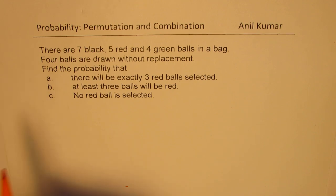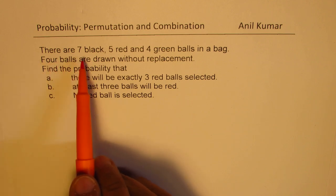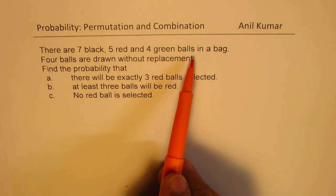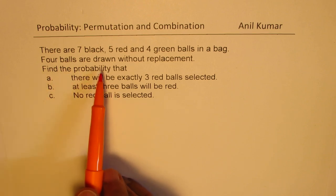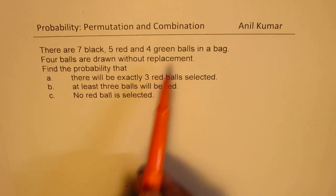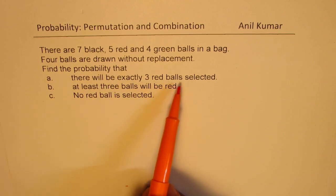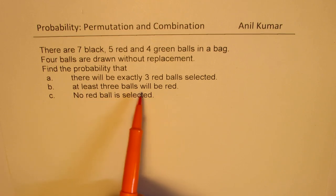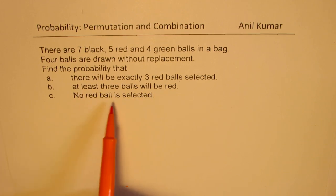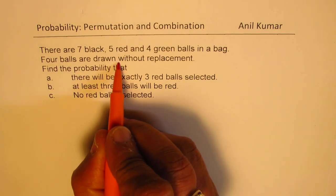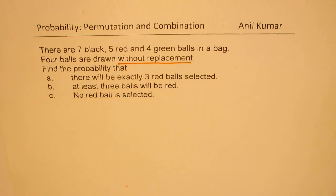The question is: there are 7 black, 5 red, and 4 green balls in a bag. 4 balls are drawn without replacement. Find the probability that there will be exactly 3 red balls selected, at least 3 balls will be red, and no red ball is selected. These are 3 different cases, and it is all without replacement. When it is without replacement, things are dependent on what has happened earlier, and therefore the dynamics is very different.